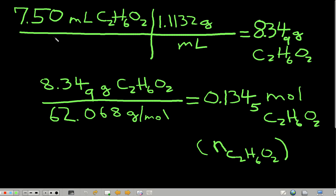Do the same sort of thing for the ethylene glycol. For that 25% solution, you measured out 7.50 milliliters of ethylene glycol times the density of ethylene glycol, which I gave you. And now you have the mass of ethylene glycol. Just take the mass divided by the molar mass, and that gives you the moles of ethylene glycol.